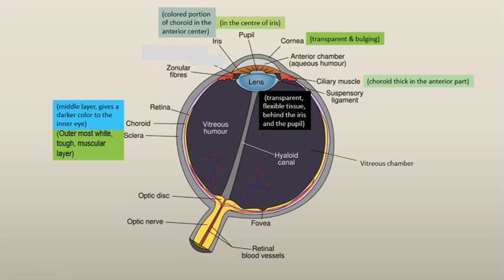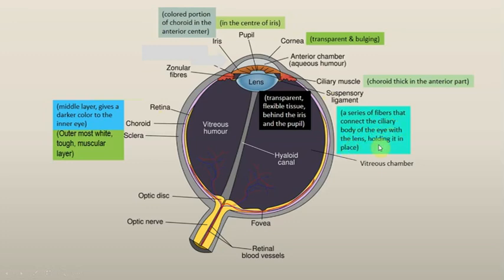This lens is held in place by the suspensory ligament. It is a series of fibers that connect the ciliary body of the eye with the lens, holding it in place. You can see that the ciliary body is connected via these thread-like fiber structures which work to hold the lens in position.